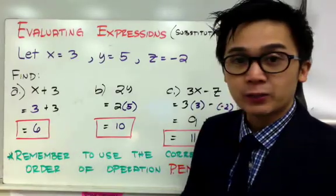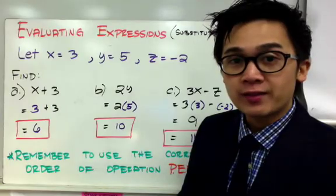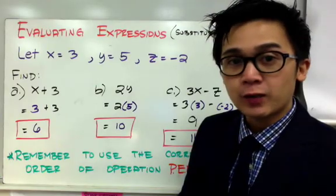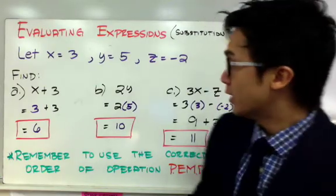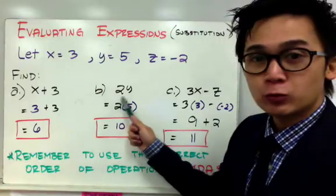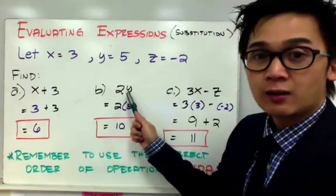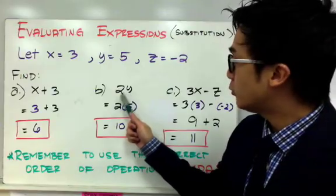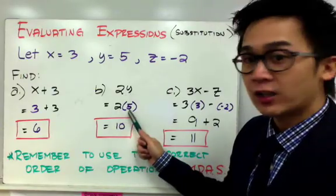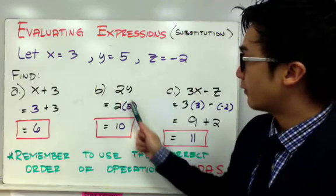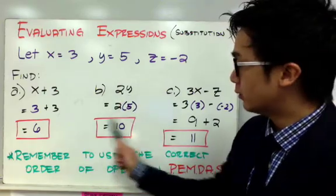That's how simple evaluating expressions is. All you have to do is plug in the given value to your expression and simplify your answer. For letter B, if I have 2y, we know that if a number is right next to the letter, the operation is multiplication. So 2y is simply 2 times the value of y, which is equal to 5. So 2 times 5 is equal to 10.